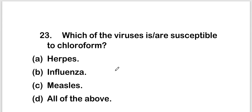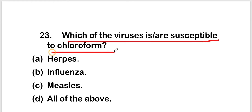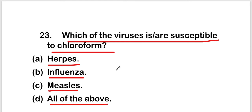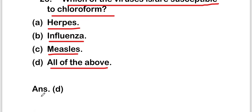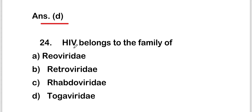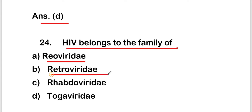The next question is: which of the following viruses is or are susceptible to chloroform? Option A is herpes virus, option B is influenza virus, option C is measles virus, option D is all of the above. The right answer is option D, all of the above.